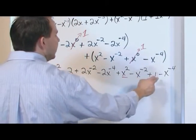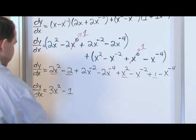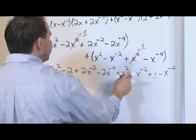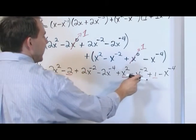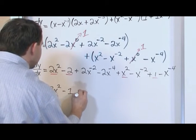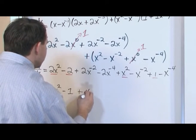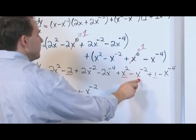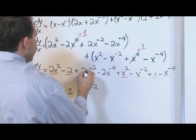Now, the only thing I need to simplify are these. Okay? So what I'll do next is I'll say, well, I have a 2x to the negative 2 here and I have a negative x to the negative 2 here. So that's going to equal plus just simply 1x to the negative 2 power. Because 2 minus the 1 there is going to give me 1.